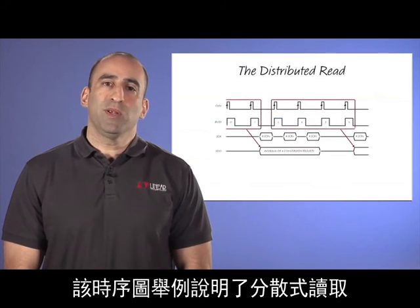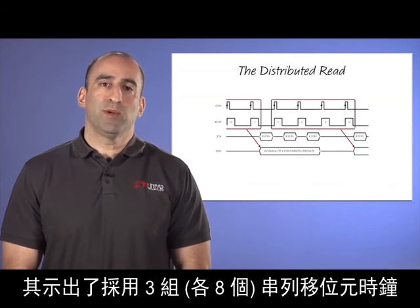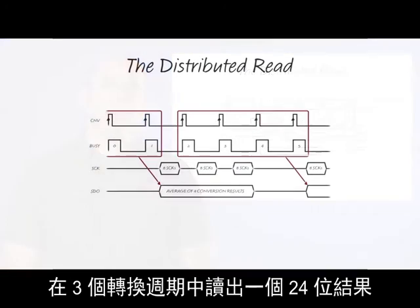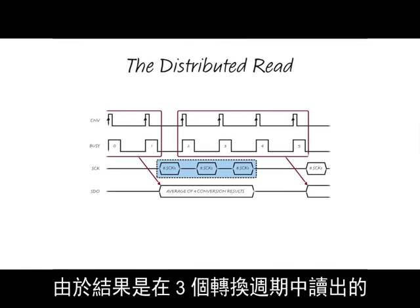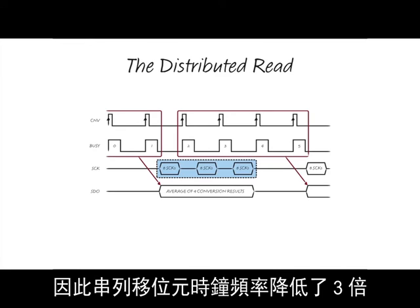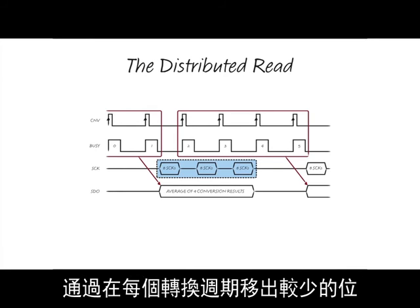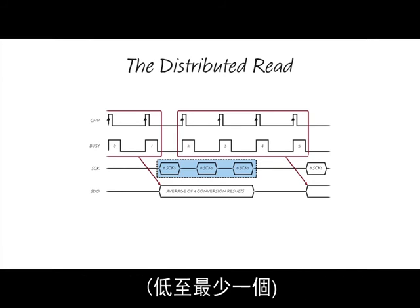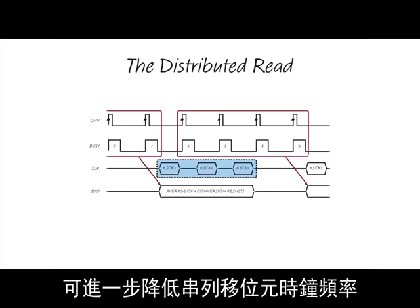A distributed read is illustrated in this timing diagram, which shows a 24-bit result read out over three conversion cycles with three groups of eight serial shift clocks. Since the results are read out over three conversion cycles, the serial shift clock frequency is reduced by a factor of three. The serial shift clock frequency can be further reduced by shifting out fewer bits per conversion cycle, down to as few as one, dramatically reducing the required serial shift clock frequency to as low as the sampling rate.